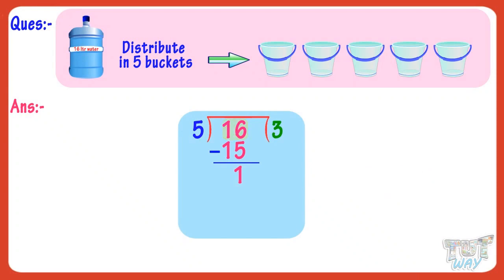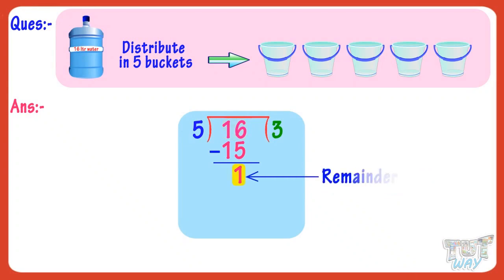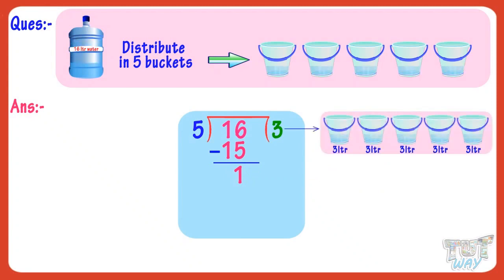Now there is no digit in the dividend left, and 1 is less than 5. So 1 is our remainder. If 16 liters of water is divided into 5 buckets, each bucket will have 3 liters of water at least, and 1 liter is left undivided.